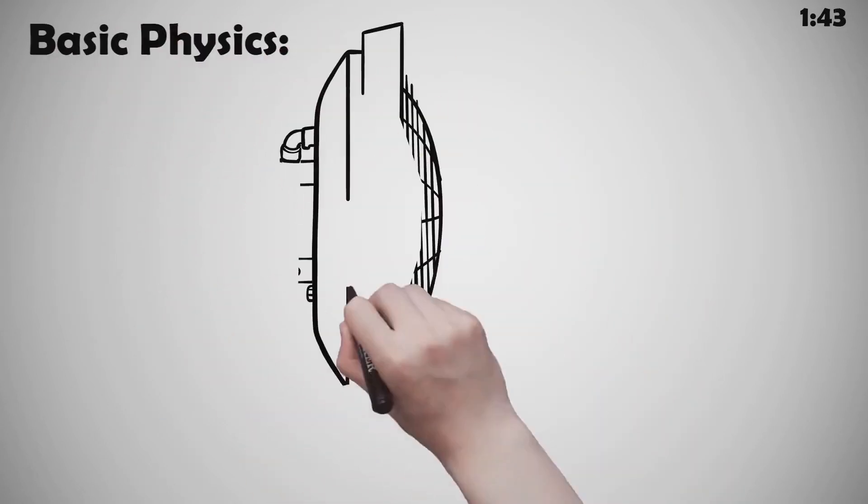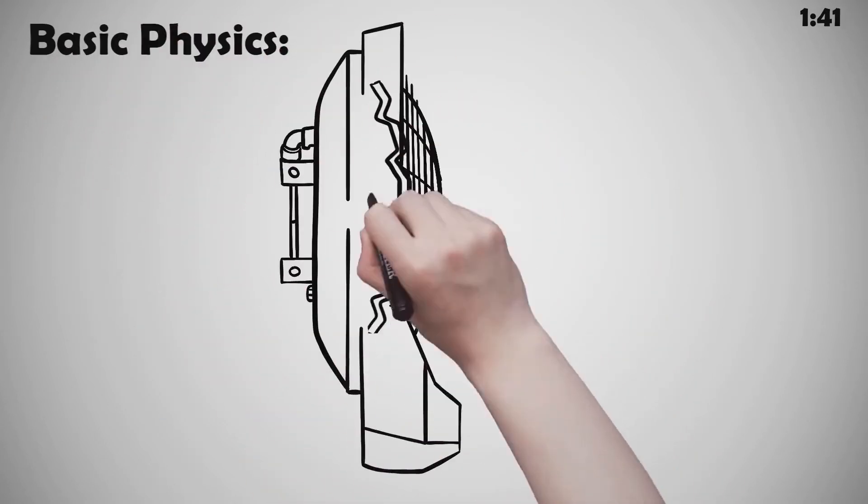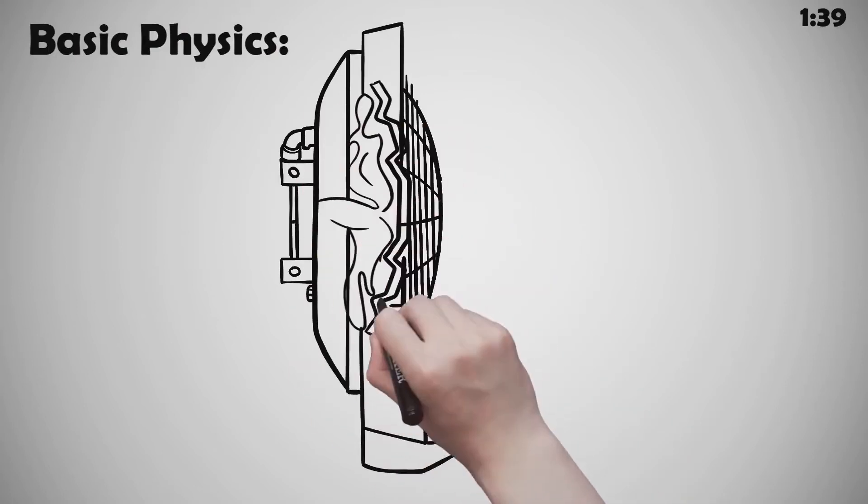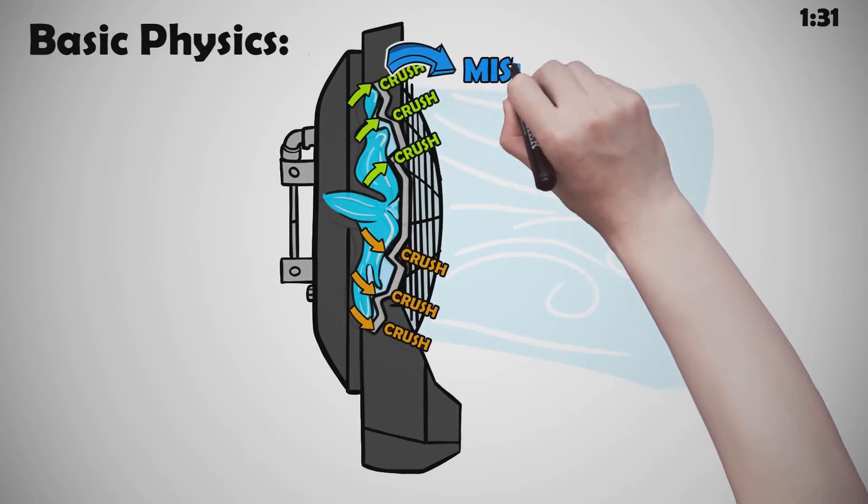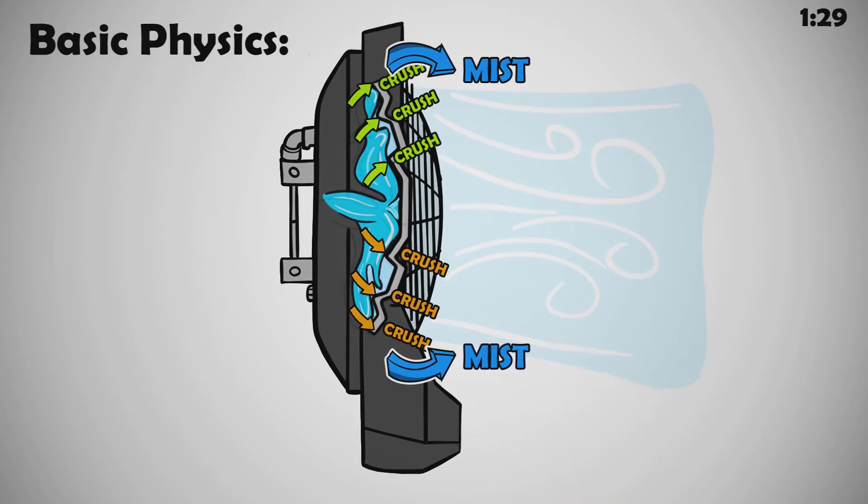The basic physics is water is sprayed on the back of the plate. Rotation speed and the plate wave-like contours determine the breakup of the water into finer and finer ligaments that end up crushing on the edge of the plate and turning into mist.